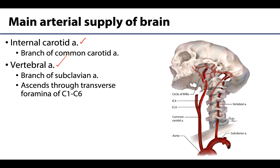The vertebral arteries are branches of the first part of the subclavian — typically the very first branch of the subclavian. This artery will ascend through the transverse foramina of C6 through C1, and then it will enter the skull via the foramen magnum, as you can see the foramen magnum right here.